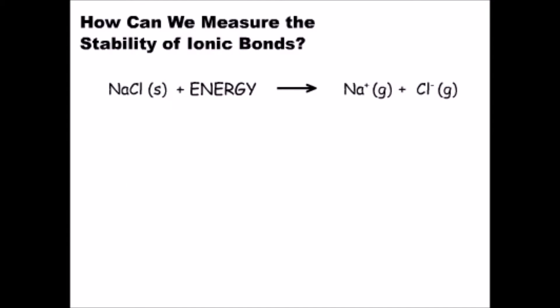Every ionic compound has its own lattice energy. A compound with a higher lattice energy is more stable than a compound with a lower lattice energy. Let's write a generic expression for lattice energy.